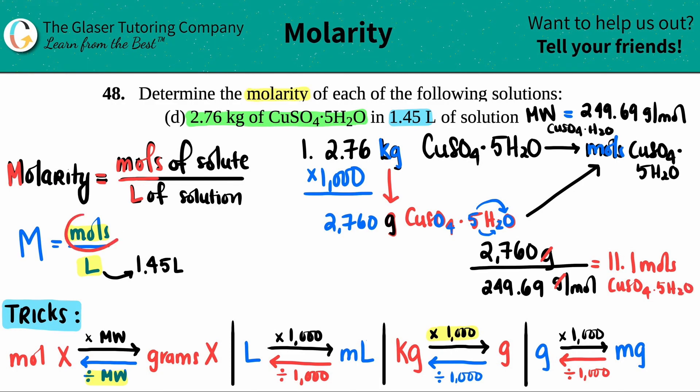Now I finally have this number. We did all that work to get to the moles. So this would be 11.1 moles. Now I can finally solve for molarity. Molarity equals the moles that I just found, 11.1 divided by the 1.45 liters that they gave us. So what do we get? 11.1 divided by 1.45, 7.66.